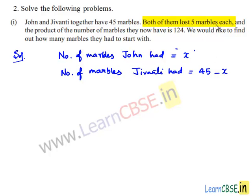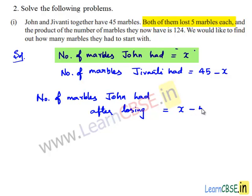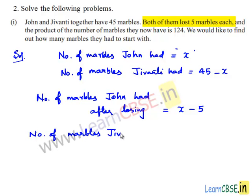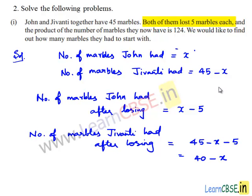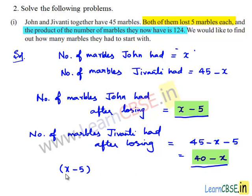Now both of them lost 5 marbles each. After losing, Jeevanti's marbles becomes 45 minus x minus 5, which is 40 minus x. According to the given condition, the product of the number of marbles they now have is 124. So the product (x minus 5) times (40 minus x) is equal to 124.